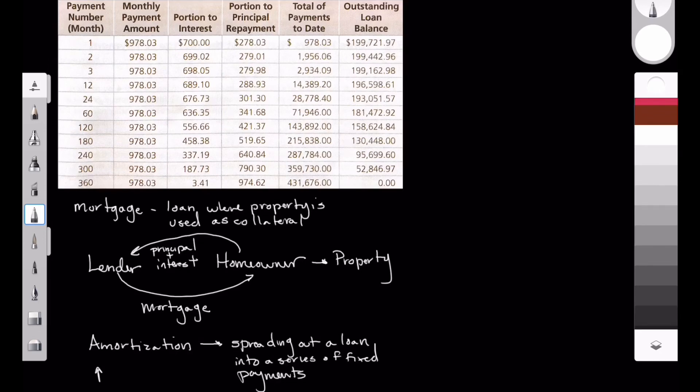So the way that amortized loans work is the interest is highest at the beginning of the loan. And then over time, the interest drastically starts to decrease. So if you were to look at this from the standpoint of like this graph here,